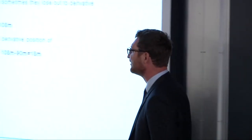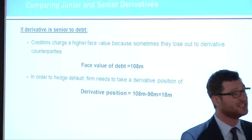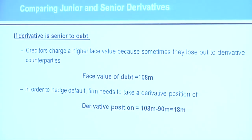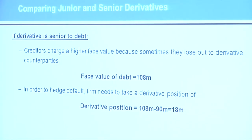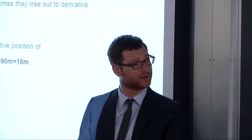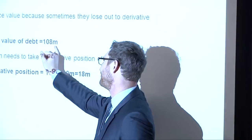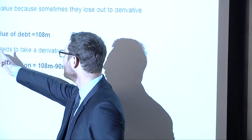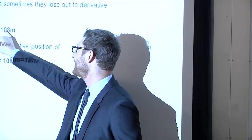Let's think about what happens under the status quo, making the derivative senior to debt. If the derivative is senior, creditors will charge an interest rate reflecting that they get paid second when the firm defaults owing both parties. Say the interest rate charged is 8%, so the face value of debt — the required repayment — is $108 million. If you want to hedge and make sure the derivative payment eliminates your cash shortfall, you had $90 million in the bad state and need to get to $108 million, so you'd have to buy $18 million notional in this derivative.